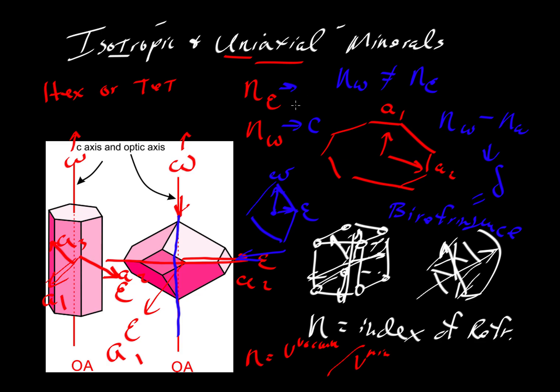And then the n epsilons will always be related to one of the equivalent a1s, a2s, or a3s. And then if you have light that's moving in some random direction, not parallel to any one of the a's or the omegas, let's say it's moving off at some angle in between, let's say a2 and omega or the c-axis here, then in that case its velocity would be somewhere in between. So we call this epsilon prime, and epsilon prime would be something intermediate between omega and epsilon.